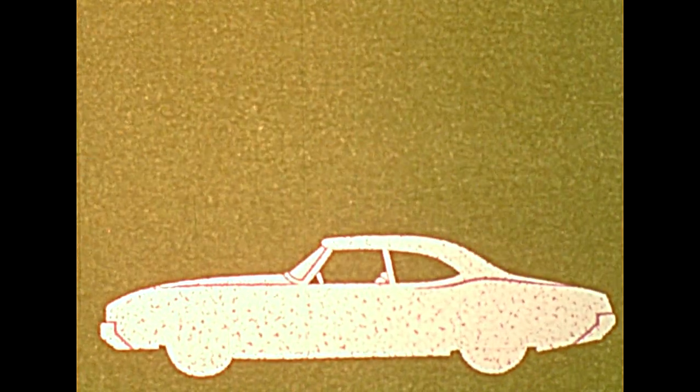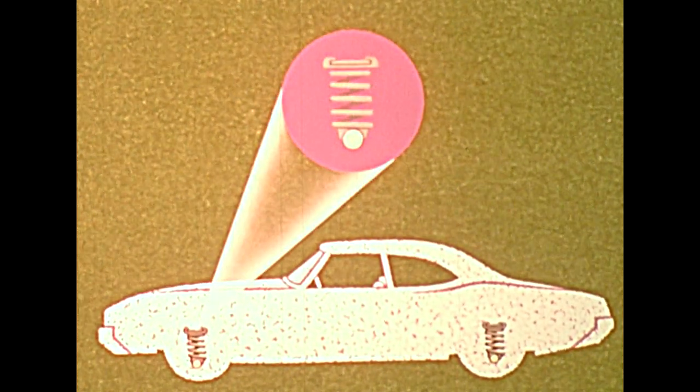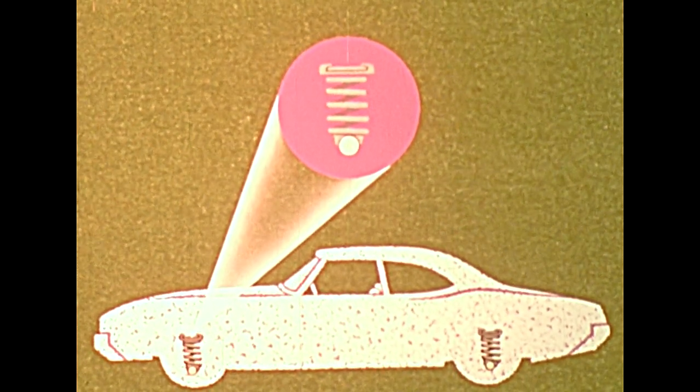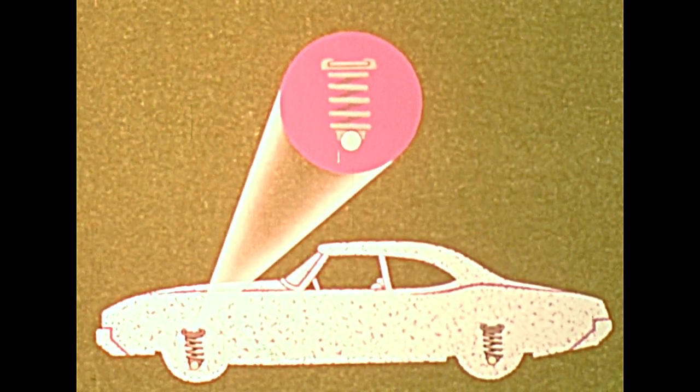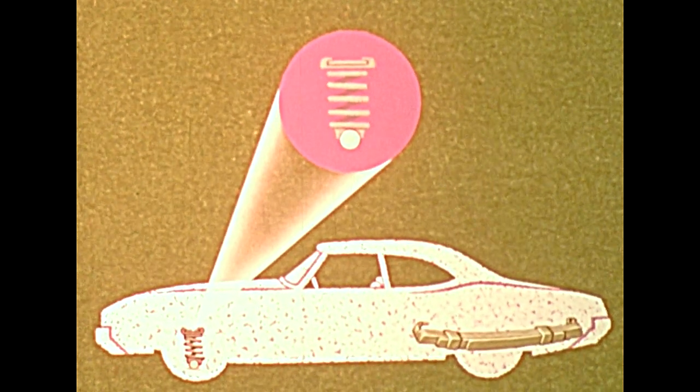Now let's take a look at springs. At the front end of the car, coils are usually used to support the frame. For the rear wheels, either coils or leaf springs are normally used. Shock absorbers snub or check the spring action to prevent bouncing when the wheels hit a bump or drop into a pothole.